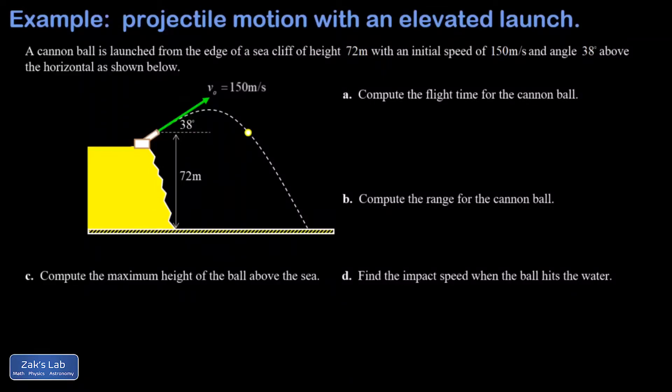In this video we have a projectile motion problem with an elevated launch position. This cannonball is shot from 72 meters above sea level and lands at sea level. This breaks the symmetry of the problem, so the common formula for range based on launch angle and speed no longer applies since that formula only works for a level surface. We have to take a more general approach to everything.